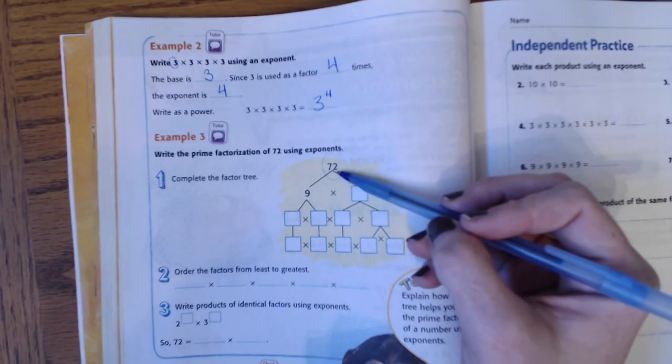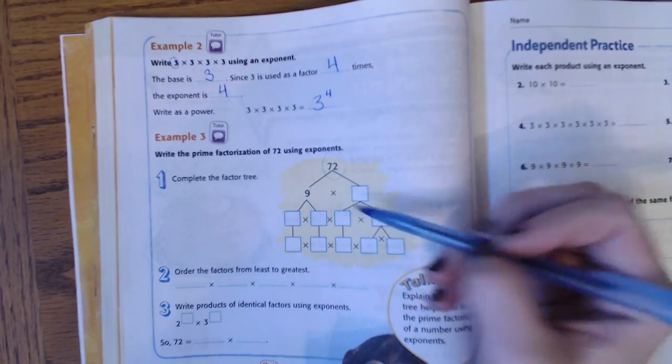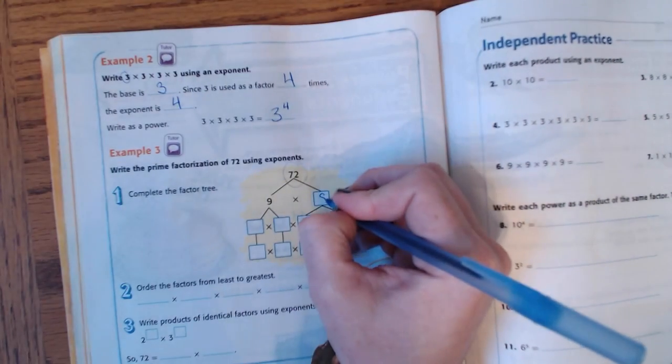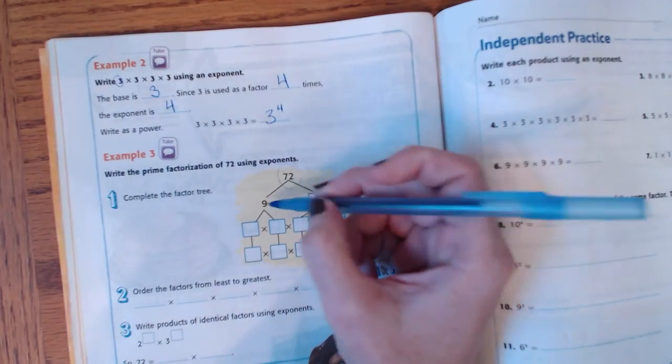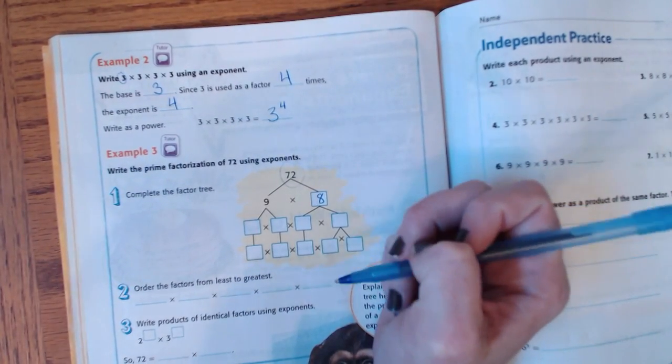72 can be broken up into nine times eight. And both of these numbers are not prime, so they can be broken down too.